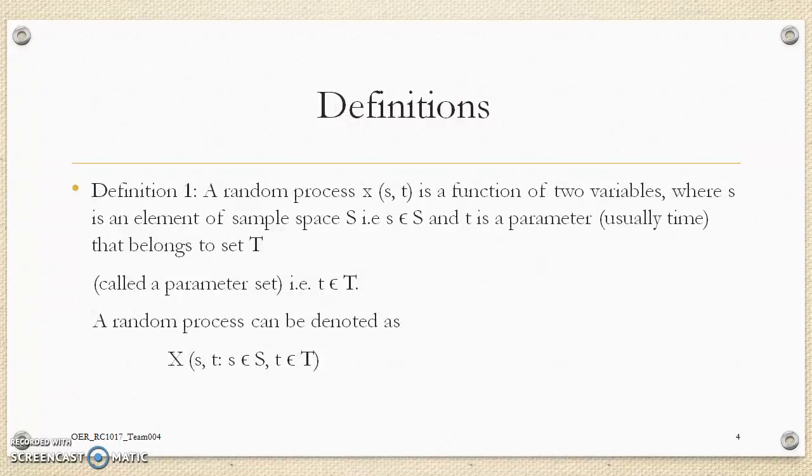Definitions of random process. First definition: a random process X(S,T) is a function of two variables where S is an element of sample space S, that is, small s is subset of S, and T is a parameter, usually time, that belongs to set T, called the parameter set.